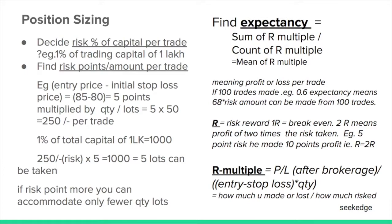If 100 trades are taken and the expectancy ratio is 0.6, it means that for every unit of risk — say 50 points — you can expect 0.6 times that in profit per trade on average. So 0.6 times 50 multiplied by the number of trades gives an estimated total profit. You have to figure out whether that is adequate as per your plan. The expectancy evolves out of backtesting and tells you whether the system is likely to perform or not.